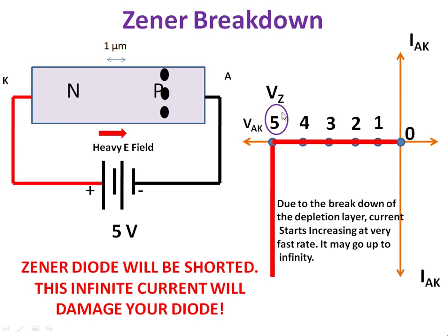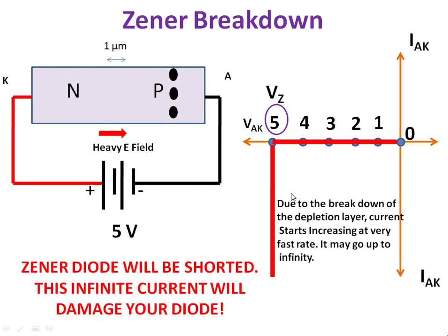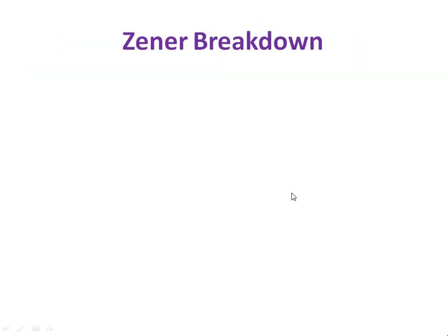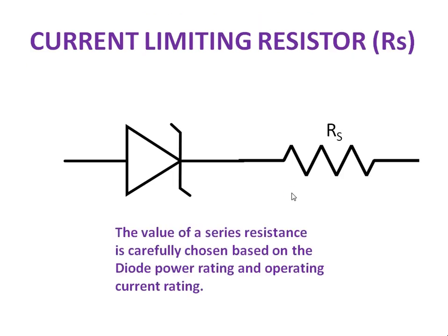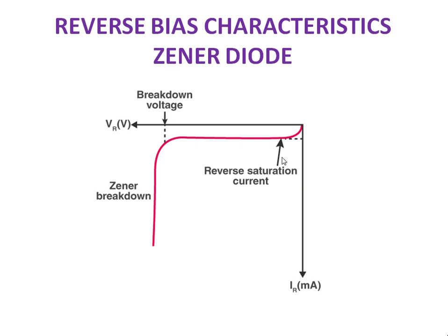But this is for an ideal case. In the ideal case, the current is 0 until VZ, the Zener breakdown voltage. But in the practical case, there will be a small amount of current flowing through the Zener diode. That current is known as reverse saturation current.